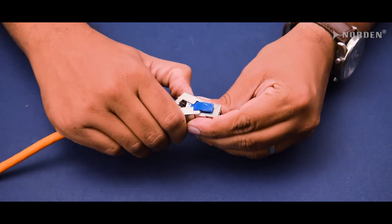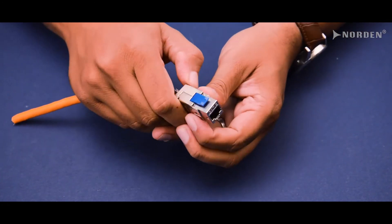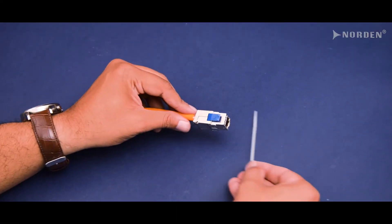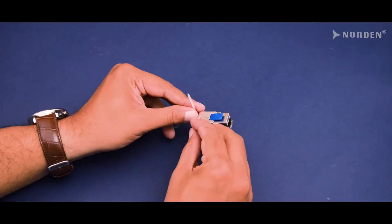Close both halves of the keystone lid by fully pressing and make sure it is locked perfectly. Finally, using the cable tie, tighten the shielded keystone jack to the cable.